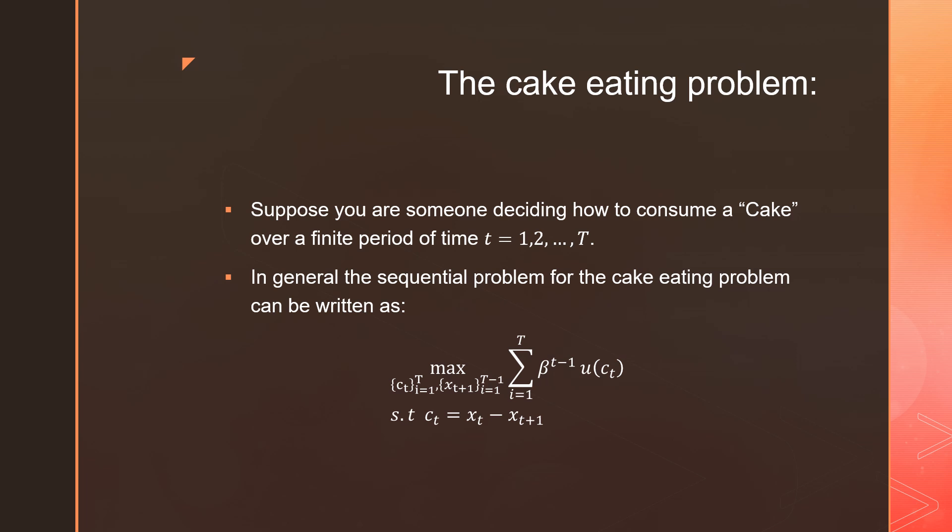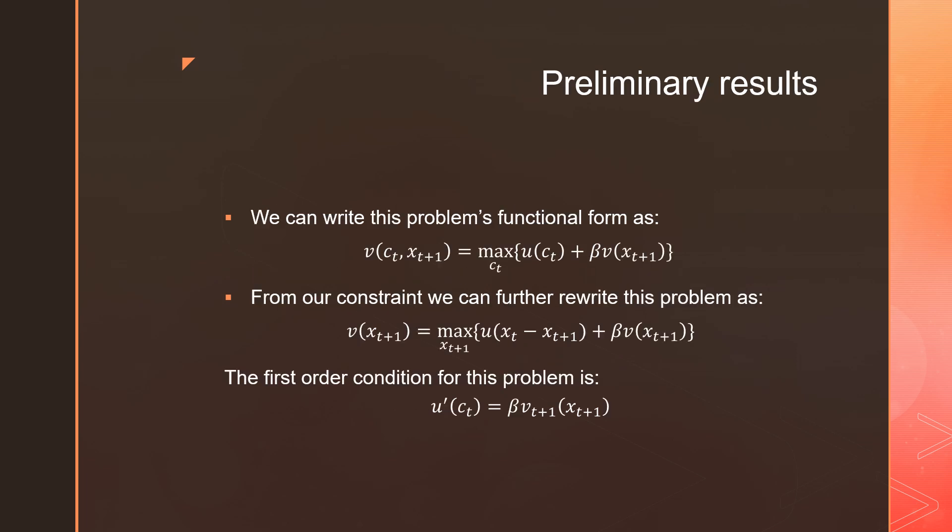Alternatively we can rewrite this as your cake size in period T, X_T, equals your consumption in period T plus your savings for the next period—that is, what amount of cake you're going to leave over for the next period. We can write the previous sequential problem in terms of a Bellman equation from our principle of optimality.